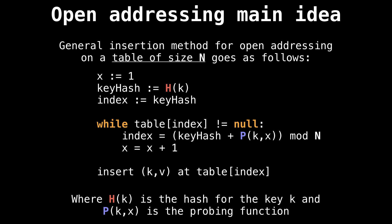x is a variable that we're going to use for the probing. And we're going to increment x each time we fail to hit a free position. Then we get the key hash just by hashing our key. And that is actually going to be the index where we're going to look in a table first.